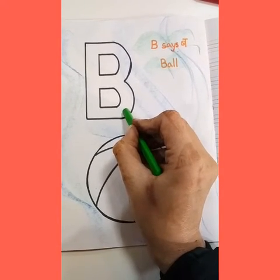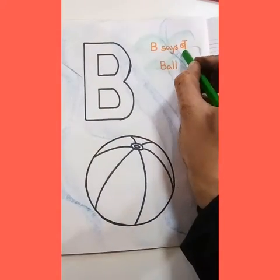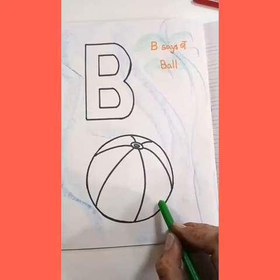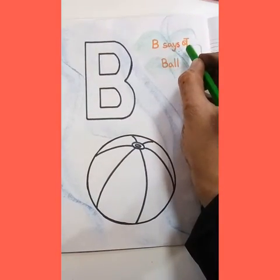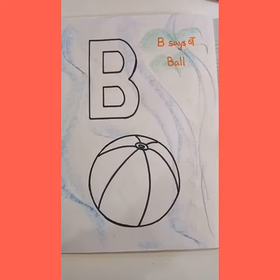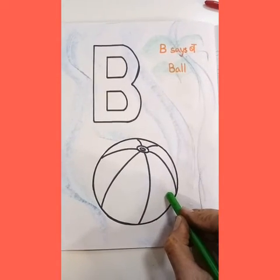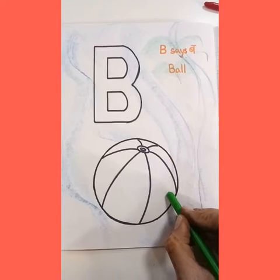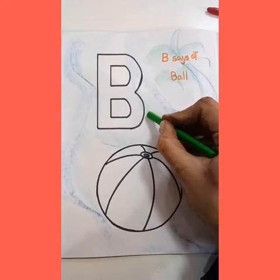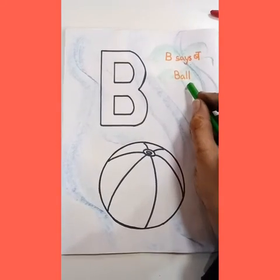Which letter is this? Letter B. B says B ball. Speak with me. B says B ball. Tell me which picture is this? Ball. Speak with me students. B says B ball.